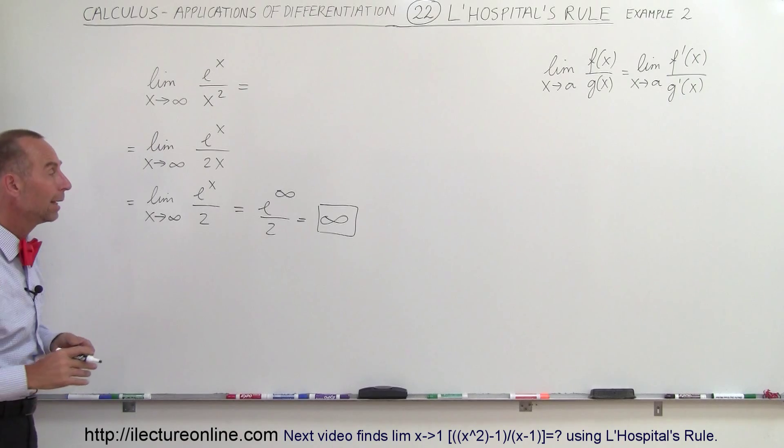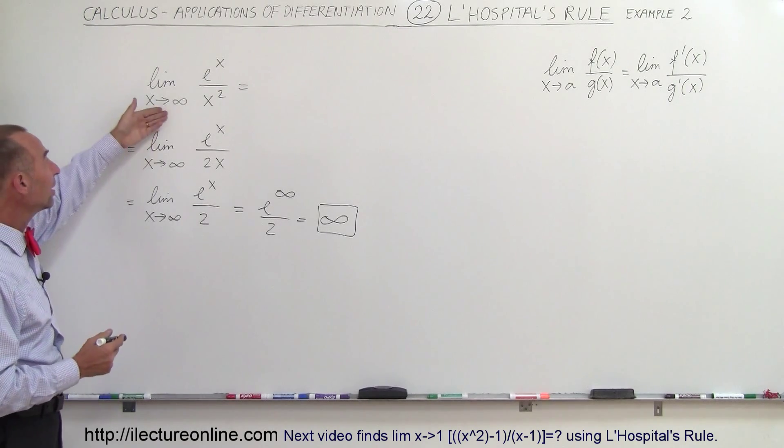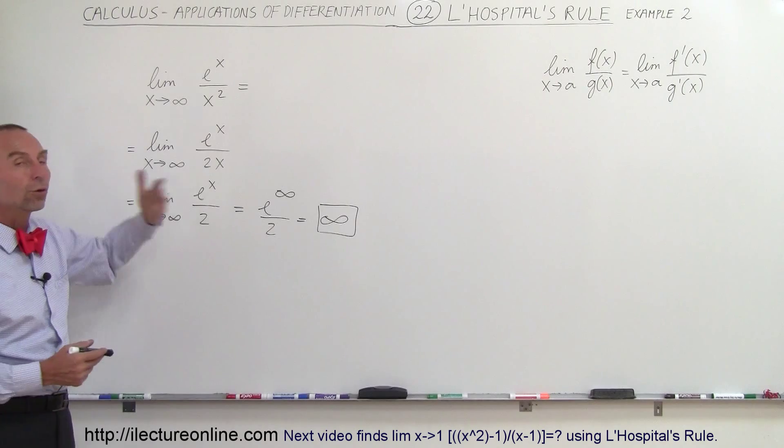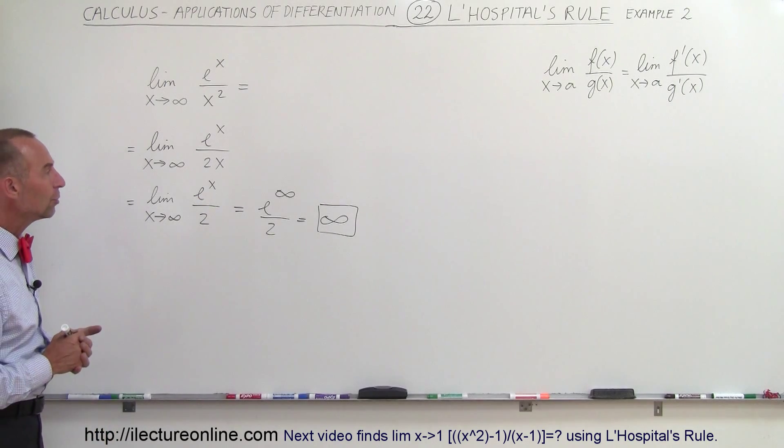So it's not an indeterminate form, it's a determined form and as you let x go to infinity, this ratio goes to infinity as well. And that's how we can do that.